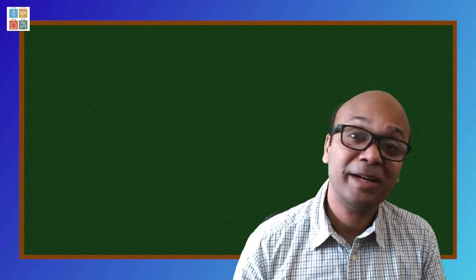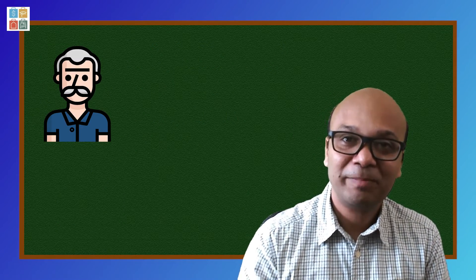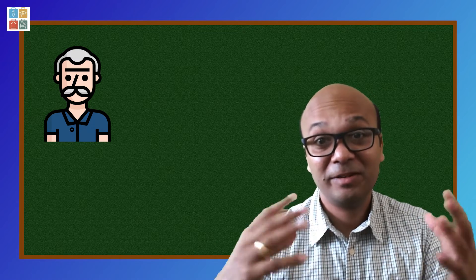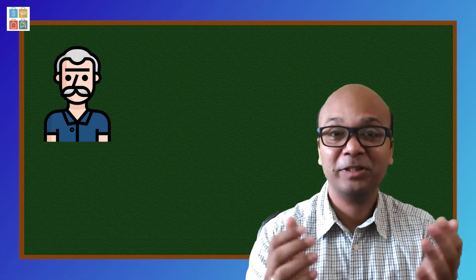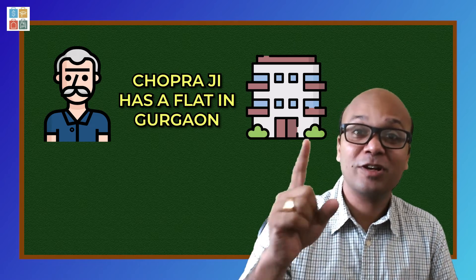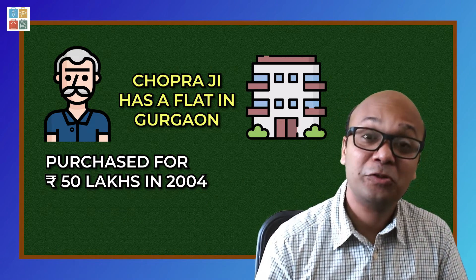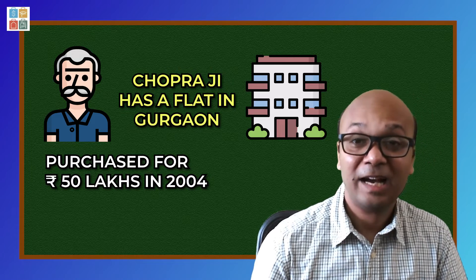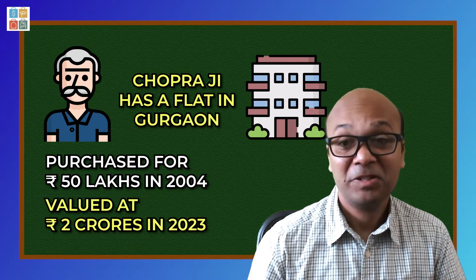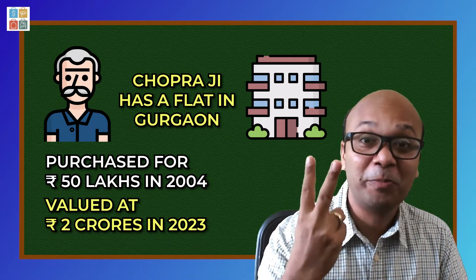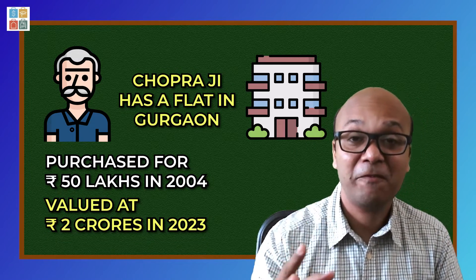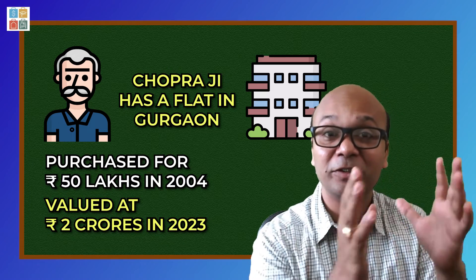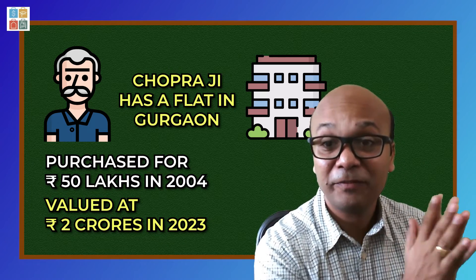Our neighbor Chopra was telling me a few days ago — he was very happy because recently real estate prices have increased quite a lot in 2023. They have a flat in Gurgaon which was worth 50 lakhs in 2004, and today its value is 2 crores — a whopping 300% return on his initial 50 lakh rupees.